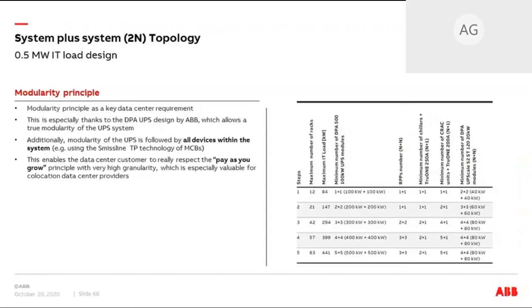Regarding modularity: the total IT load is 441 kilowatts, but you don't need to have this high load immediately, nor do you need to make the full investment right away, because we wanted to respect the pay-as-you-go principle — especially valuable for colocation data centers. You can reach this total load of 441 kilowatts in five steps: from 84 kilowatts, to 147 kilowatts, and so on, by adding a new module — our Decentralized Parallel Architecture, DPA. Diana will show you more details on this in the next presentation, as well as the RPPs, which Nico will share with you.